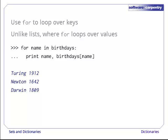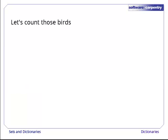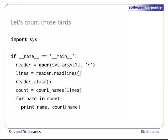Here, for example, the for loop assigns each key of the birthdays dictionary to the variable name in turn. Inside the loop, we use name to look up the value associated with that key and print both out. Now, let's go back and count those birds.